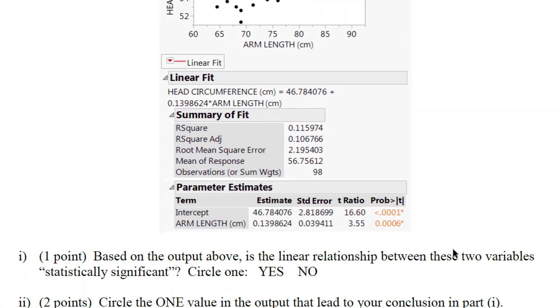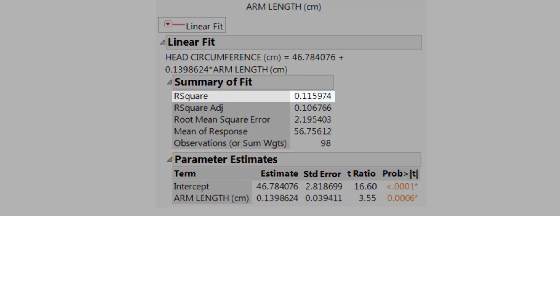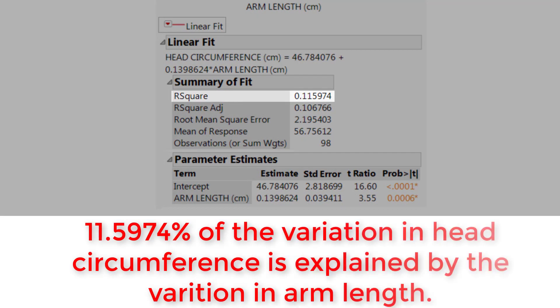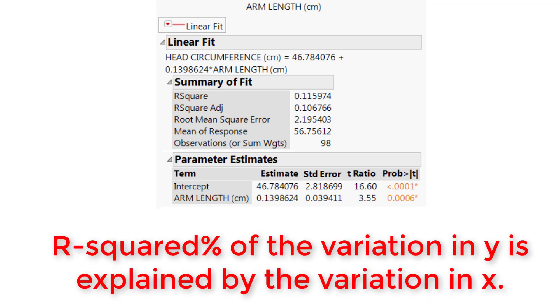There's lots to interpret on the screen right now. We even have r-squared which has not been mentioned yet. R-squared right here would be 11.59 percent of the variation in head circumference is explained by the variation in arm length. And a general interpretation of r-squared would be blank percent of the variation in y is explained by the variation in x.